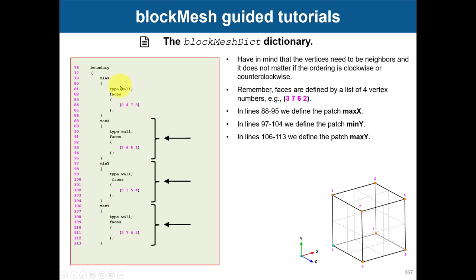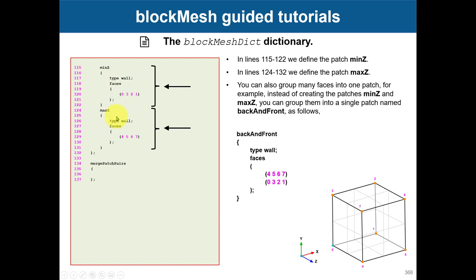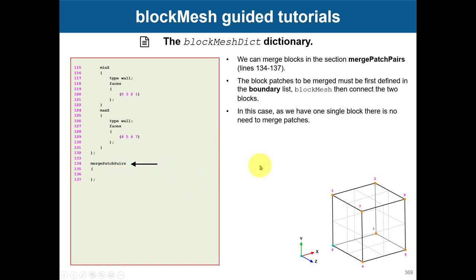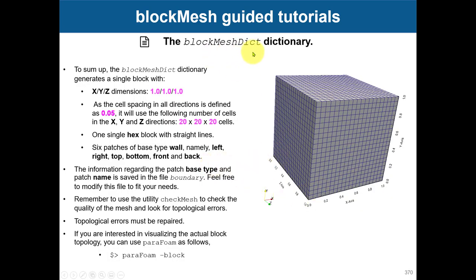Everything is parametrical — I always leave it like this, and when I have my final mesh I just change the patch names. You can also group patches: instead of having two separate patches, you can create something like 'back and front' as walls and put them together. There is also a 'mergePatchPairs' entry — if you want to know what it does, go to the supplement. It is used to merge blocks when you have multiple blocks, but for single block it is not needed.